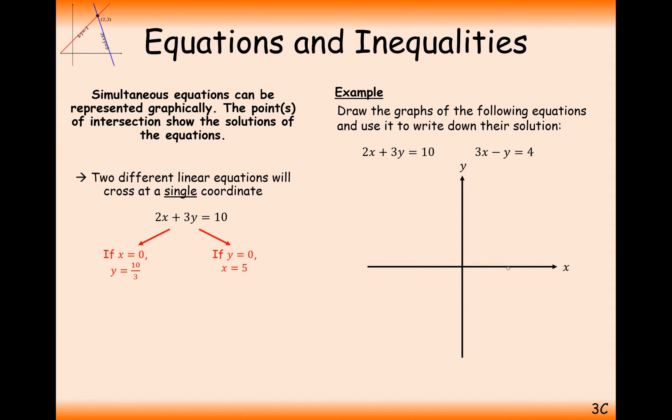And when y is equal to 0, x needs to be 5, so we've then got another point on our x-axis here. Effectively, these two things here can be considered as coordinates: 0 for the x-coordinate and 10 over 3 for the y-coordinate. And similarly here, 5 for the x-coordinate and 0 for the y-coordinate. So you know two points that the graph is going through. And given that we don't have any squared terms in this graph here, then we can just draw a straight line through those two points there.